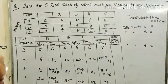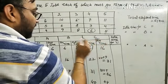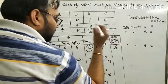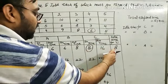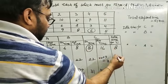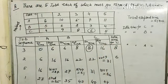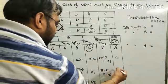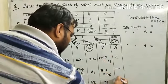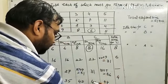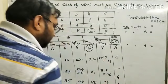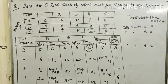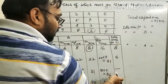Idle time for machine C: C starts idle for 8 hours initially. Then between 16 and 22, idle for 6 hours. Between 31 and 31, no idle time. Between 36 and 40, idle for 4 hours. Between 44 and 45, idle for 1 hour. Total idle time for machine C is 8 plus 6 plus 4 plus 1 equals 19 hours.